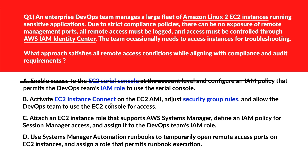Option B is: activate EC2 Instance Connect on the EC2 AMI, adjust security group rules, and allow the DevOps team to use the EC2 console for access. EC2 Instance Connect depends on security group rules, which violates the restriction on exposing remote management ports. It's incorrect.